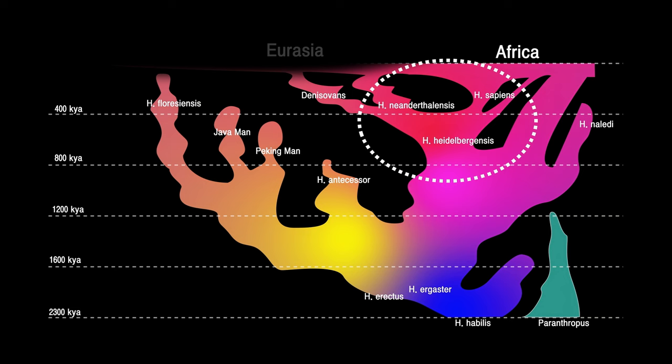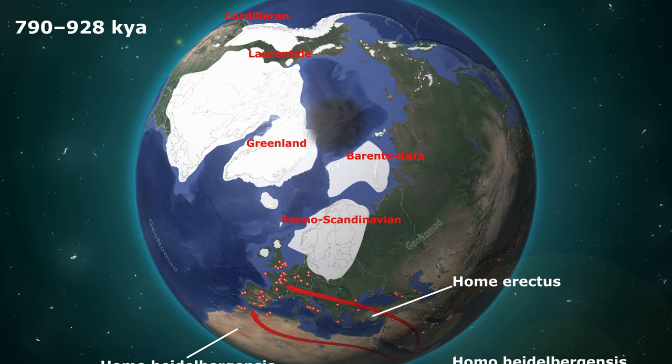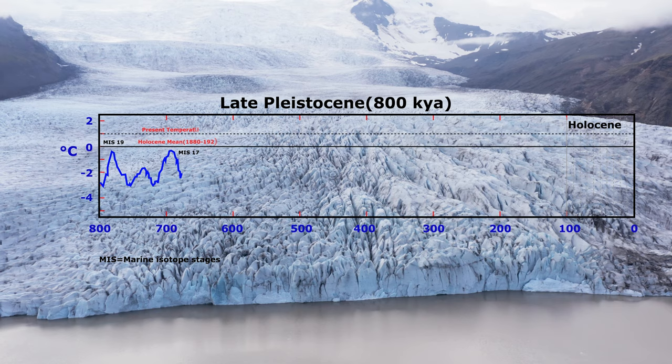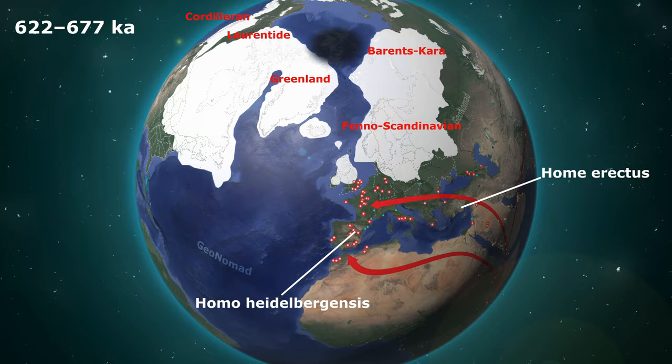For 800,000 years, Earth's average temperature was 5 degrees Celsius lower than today. Northern hemisphere glaciers did not change significantly during this period, except for a slight enlargement of the Fenno-Scandinavian ice sheet. 700,000 years ago, the temperature became warm during an interglacial period. However, 677,000 years ago, the temperature dropped again and a glacial period began, lasting until 622,000 years ago.